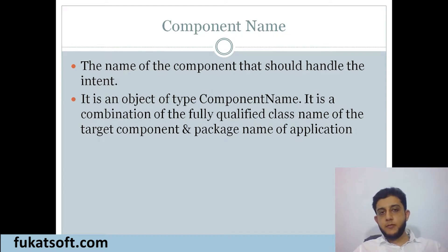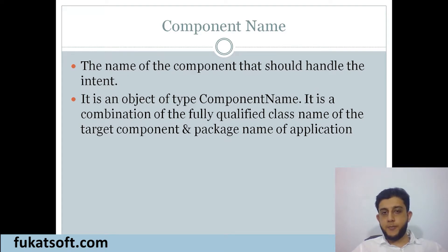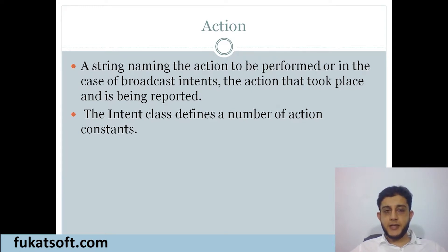Component Name — جیسا کہ نام سے واضح ہے کہ جب بھی ہم نے ایک activity سے دوسری activity پر jump کرنا ہے تو intent کو اس activity کا نام دینا پڑے گا جس میں jump کرنا ہے یا جس کو activate کرنا ہے — اسے Component Name کہتے ہیں۔